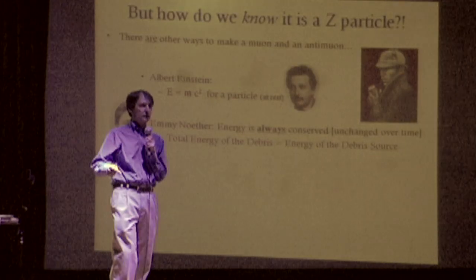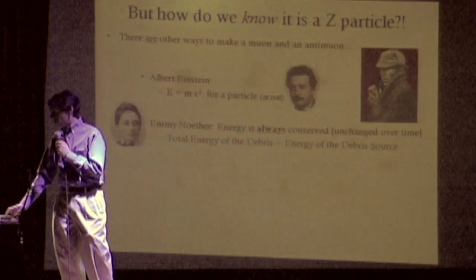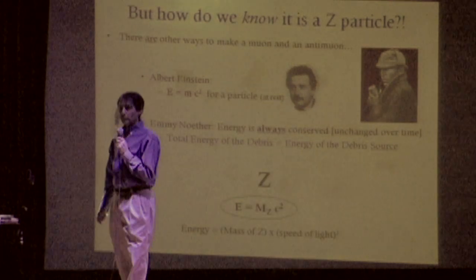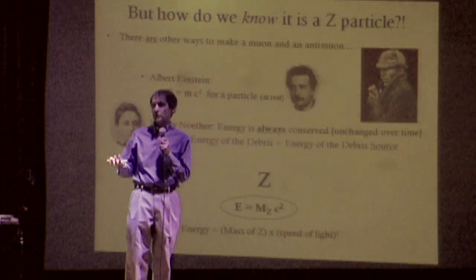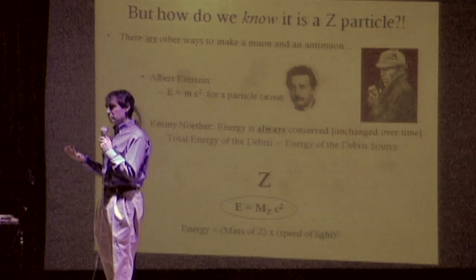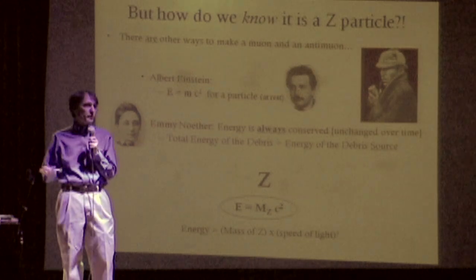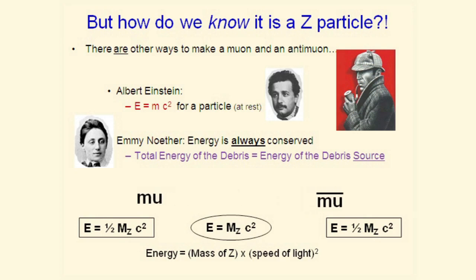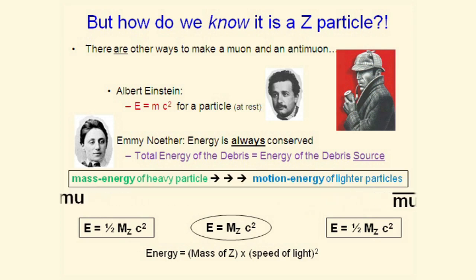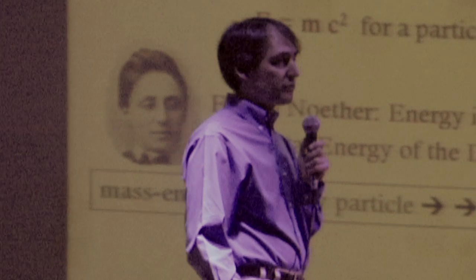However much energy goes in at the beginning comes out at the end. So you combine these two things and you do the following. Imagine for simplicity you have a Z particle just sitting there at rest. How much energy does it have? It's all mass energy. It's E equals the mass of the Z particle times C squared. And we know enough about Z particles to know what that mass is. And when it decays into a muon and anti-muon, each of those muons carries off exactly half the energy. But it's all in motion energy, which we measure using those detectors.